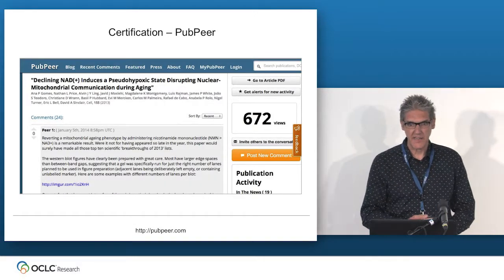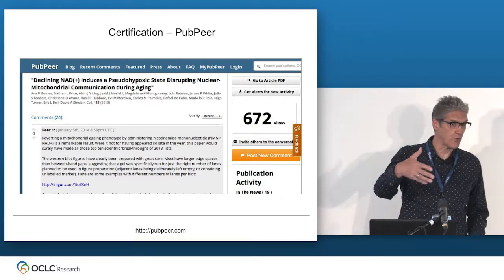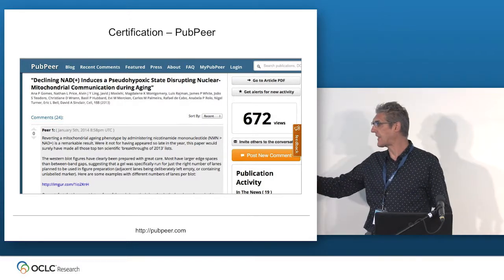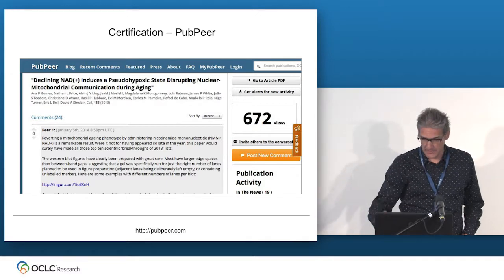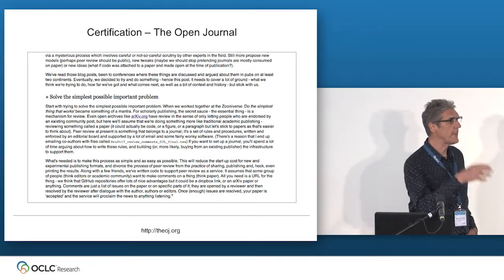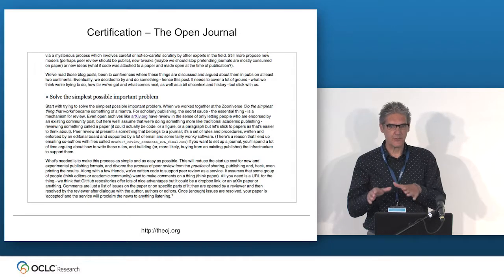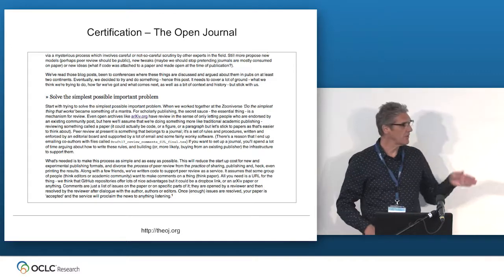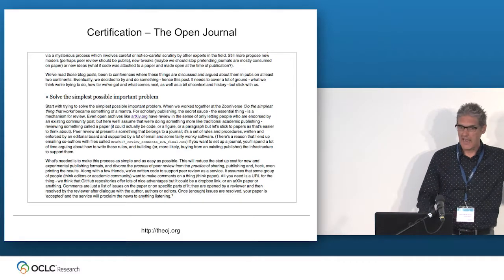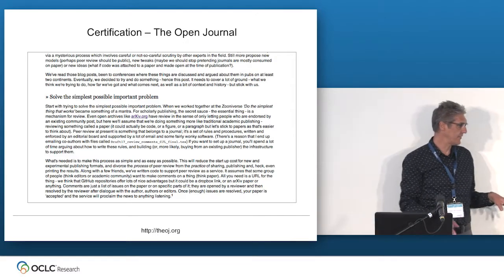Moving to the second function: certification. One of the things we see increasingly is post-publication commentary as an additional form of certification. These are papers in PLOS that have already gone through a rigorous peer review process, but then we get additional commentary from authors providing a next level of peer review. Open Journal just announced — totally along the lines of a vision I wrote ten years ago — a platform that will do peer review certification of preprints deposited in the physics archive.